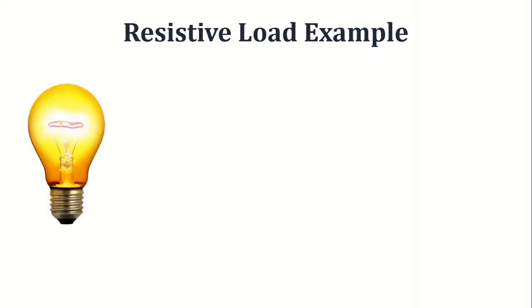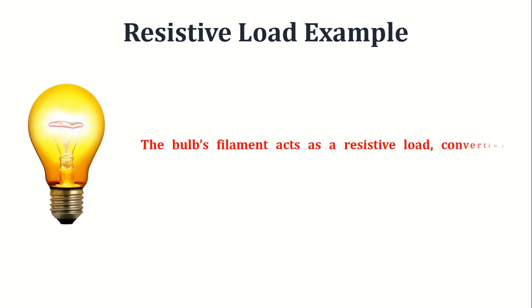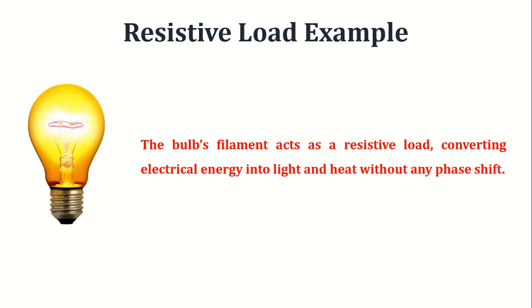Let's review a real-life example of a resistive load. Think of an old-fashioned incandescent light bulb. When you turn it on, it glows and produces heat. The bulb's filament acts as a resistive load, converting electrical energy into light and heat without any phase shift.